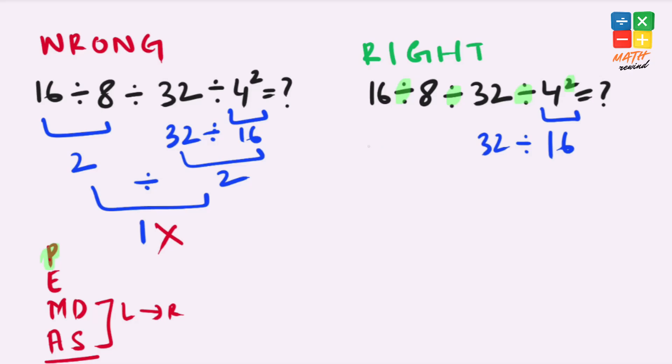Our equation becomes 16 divided by 8 divided by 32 divided by 16. Now in this equation we have division operators available 3 times, and as per the rules if you have multiplication or division available in an equation you must work from left to right.